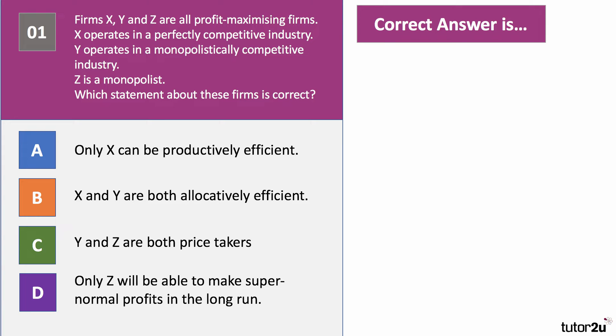Here's question one. Firms X, Y and Z are all profit maximising firms. X is in a perfectly competitive industry. Y is in a monopolistically competitive industry. Z is a monopolist. On the basis of that information, which statement about these firms is correct? The right answer is D.